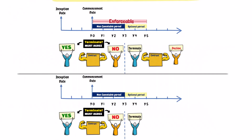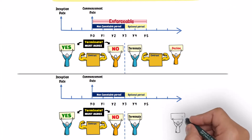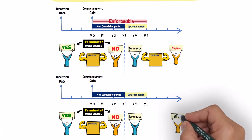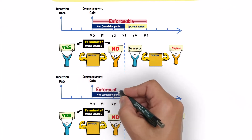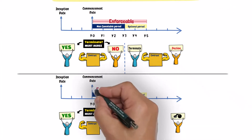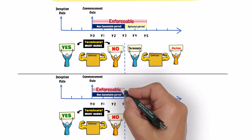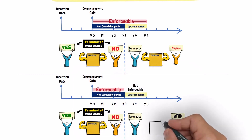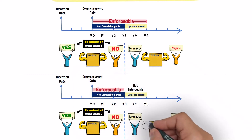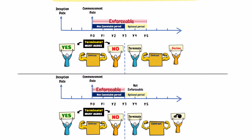However, if the lessor cannot prevent the lessee from terminating the lease, then the lease is enforceable only for the first three years of the contract, and not enforceable during the two years of the optional period.